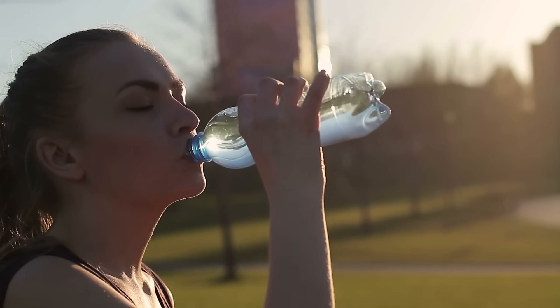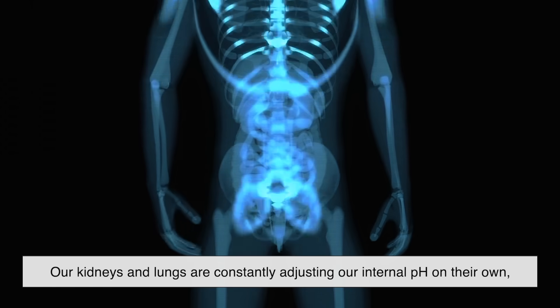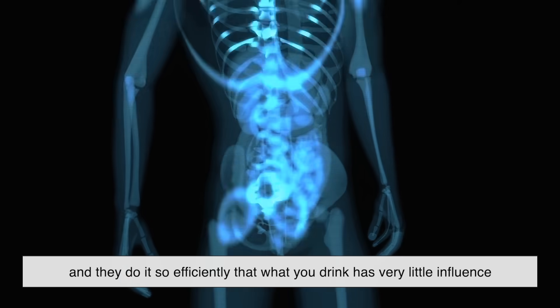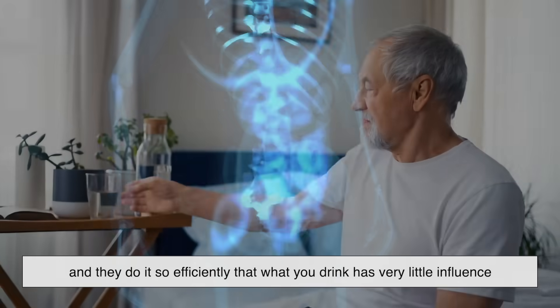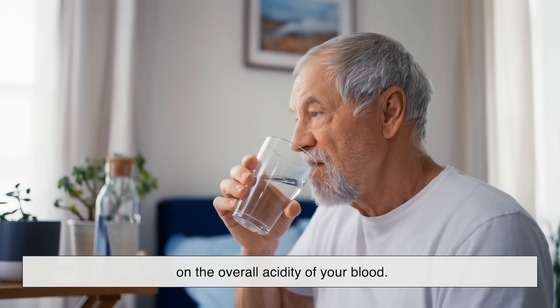If you've ever heard someone say your body becomes too acidic, they're usually referring to this concept. The problem, however, is that the body doesn't work that simply. Our kidneys and lungs are constantly adjusting our internal pH on their own, and they do it so efficiently that what you drink has very little influence on the overall acidity of your blood.